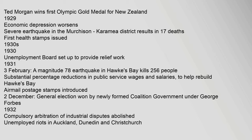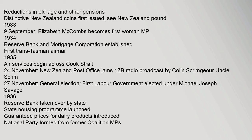1930s. 1930: Unemployment board set up to provide relief work. 1931, 3 February: A magnitude 7.8 earthquake in Hawke's Bay kills 256 people. Substantial percentage reductions in public service wages and salaries to help rebuild Hawke's Bay. Airmail postage stamps introduced. 2 December: General election won by newly formed coalition government under George Forbes. 1932: Compulsory arbitration of industrial disputes abolished. Unemployed riots in Auckland, Dunedin and Christchurch.